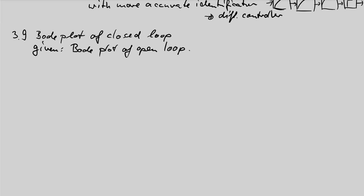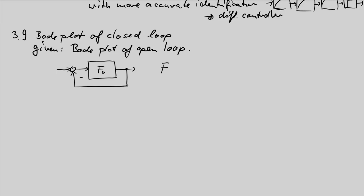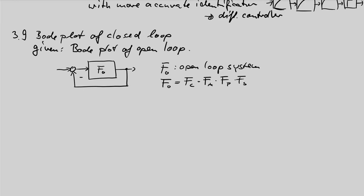The approach goes in the following steps. First, I draw the general signal block diagram. We have negative feedback and only one block. We call this F_O the open loop transfer function or open loop system. The open loop contains all blocks: the controller, the actuator, the process itself, and the sensor.